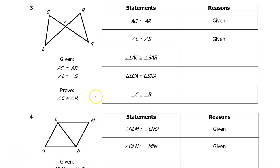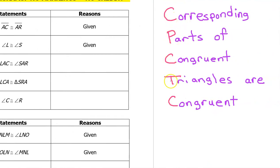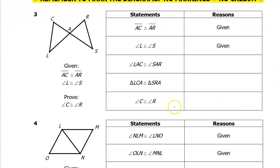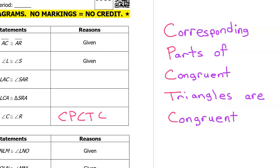In this video, I'm going to show you how to prove that corresponding parts of congruent triangles are congruent. So look at this acronym: CPCTC. This stands for Corresponding Parts of Congruent Triangles Are Congruent. That means that once we have already proven that two triangles are congruent, we can pick any pair of corresponding parts and say that they are also congruent, and the reason will always be CPCTC.